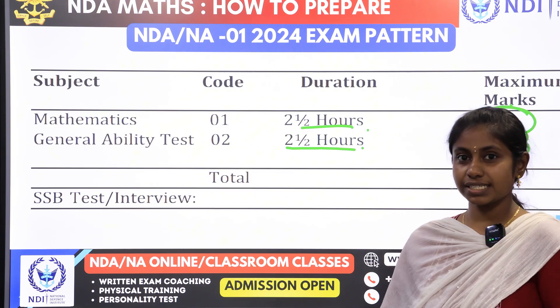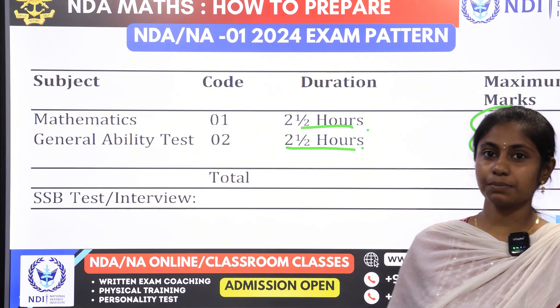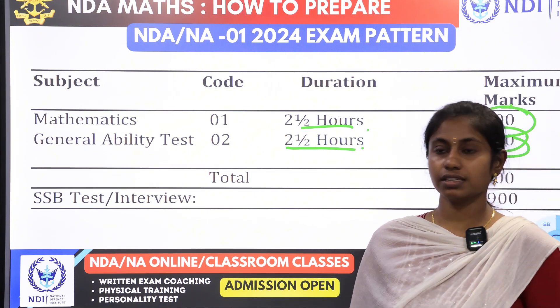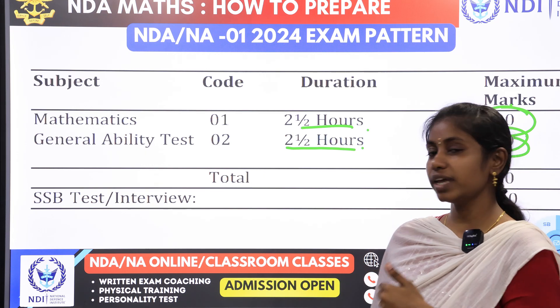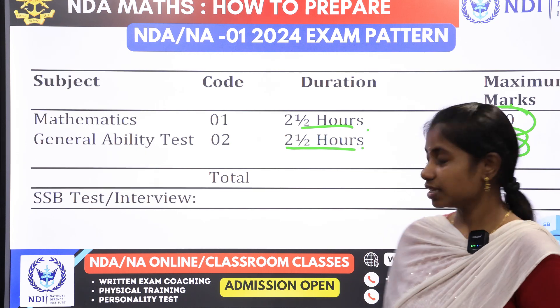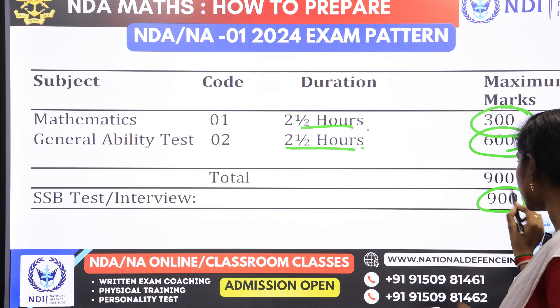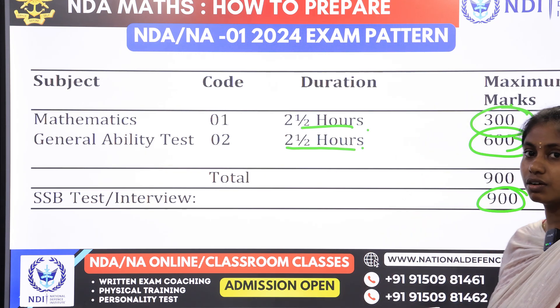Once you pass the written papers, we will move on to the SSB test. That SSB test is nothing but 900 marks.